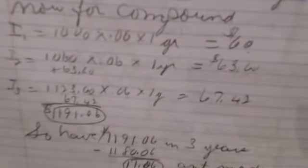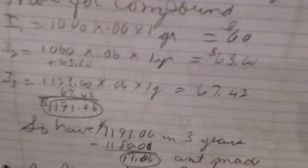So the $1,191.06 is what I had at the end of three years. But when I did it for simple interest, I had $1,180. And you say, what's the difference? Well, the difference is we made money on the interest that they paid us.